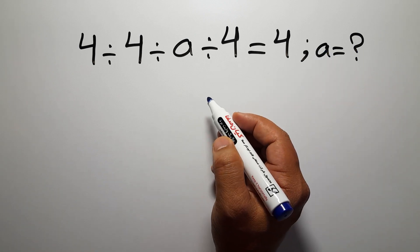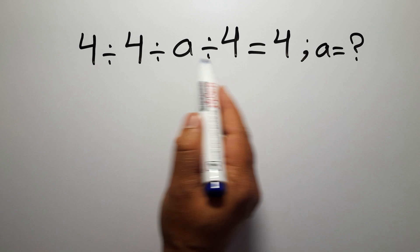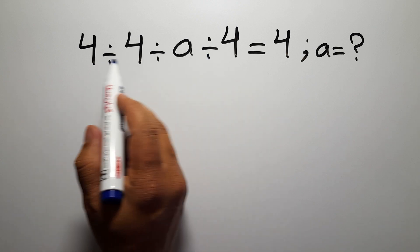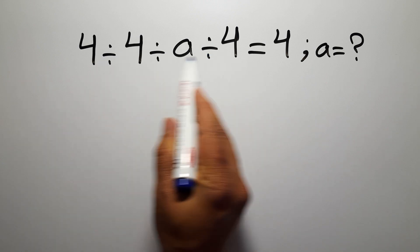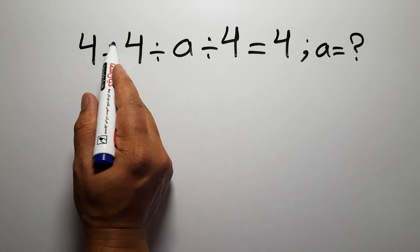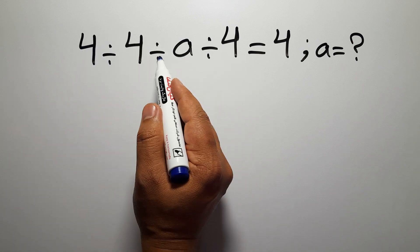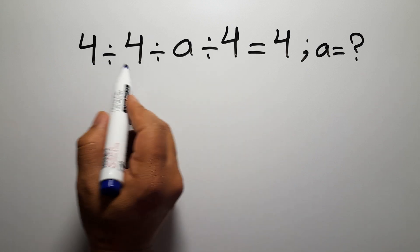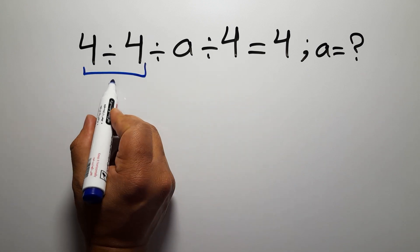Are you ready to solve? Let's go. On the left hand side we have three divisions, and as we know, when we have more than one division in an expression, we have to work from left to right. So first we have to do this division, then this division, and finally this division. 4 divided by 4 gives us just 1.